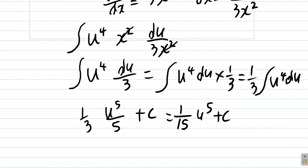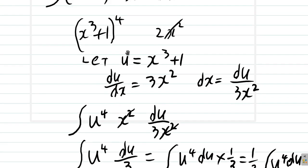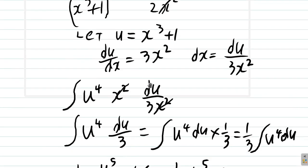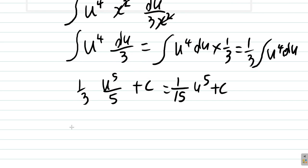But now you need to rewrite things in terms of x. U was x cubed plus 1. So what you have is all of this is equal to 1 over 15 times x cubed plus 1 to the power of 5 plus c. And that is your answer.